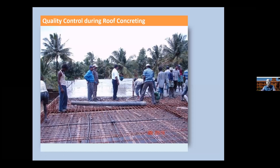Here is the interesting practical part — quality control during roof concreting. During concreting, the water-cement ratio must be maintained, compaction and vibration done properly, and uniform slab thickness maintained. The reinforcement — top bars and bottom bars — must be effectively placed with cover blocks. Electrical conduit work must be intact, and binding wires properly tied with side supports in place. This is the kind of standard we need to follow while doing concreting.